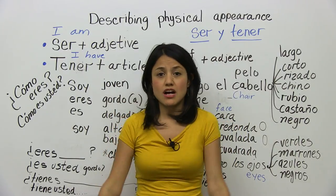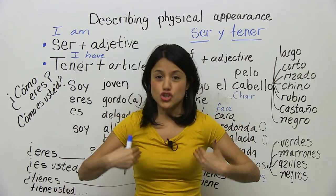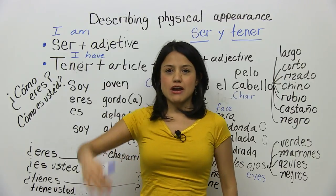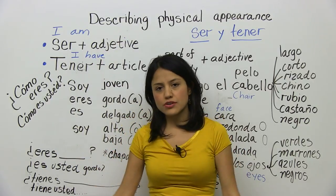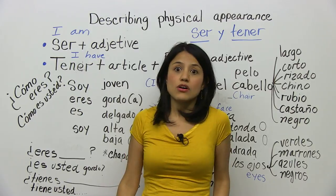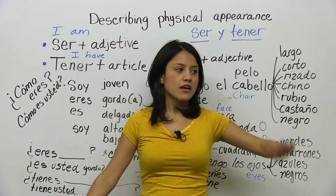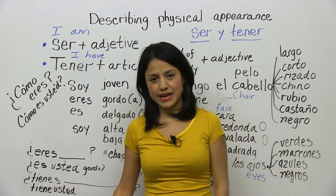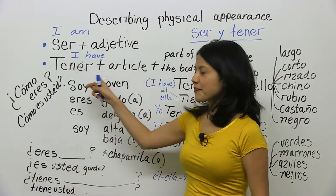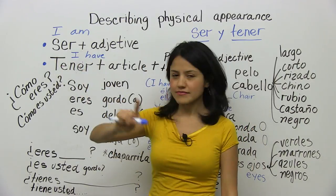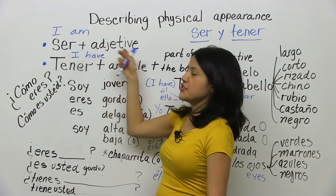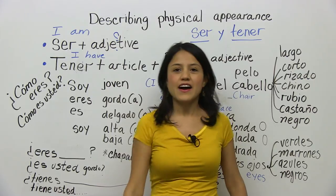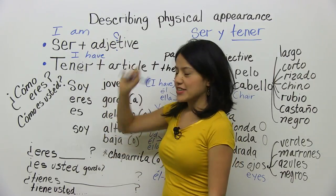Usually when you're describing yourself, you're just going to use yo. Maybe you're describing your friend to your other friend, so you're going to use él. Or you're describing your girlfriend — tu novia — and it's she. Ser plus an adjective — ser plus adjective.